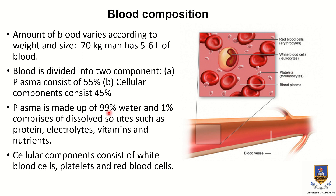Plasma is made up of approximately 90 percent or more water — this value is not fixed but is just above 90 percent. The remaining portion, less than 10 percent, comprises dissolved solids including proteins, electrolytes, vitamins, and nutrients.